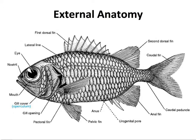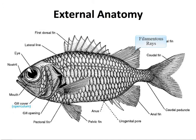The fins are not only important for locomotion but also for identification. If you're ever tasked with identifying a fish you've caught, you'll need to count the number of spinous rays in the dorsal fin and also the number of filamentous rays. The spinous rays are the pokey ones, sort of like a syringe needle, and the filamentous rays are the ones that are soft.